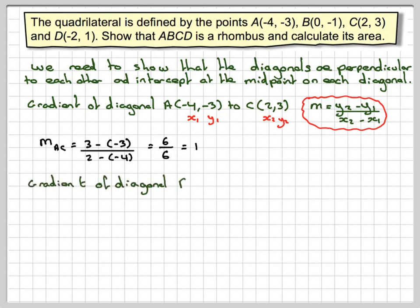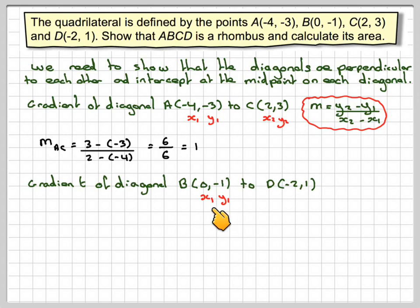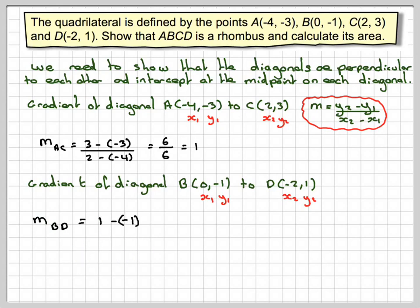Now the gradient of diagonal BD, from B(0, −1) to D(−2, 1). Calling B: X1, Y1 and D: X2, Y2, we get MBD = (1 − (−1)) / (−2 − 0) = 2 / −2 = −1.